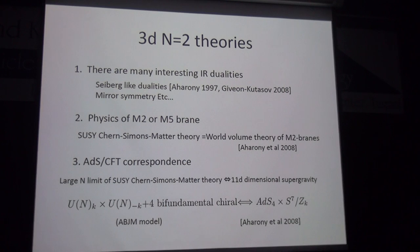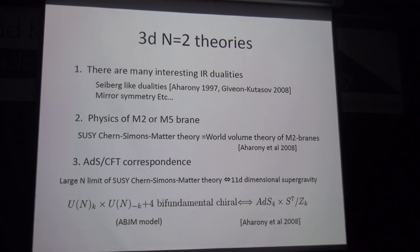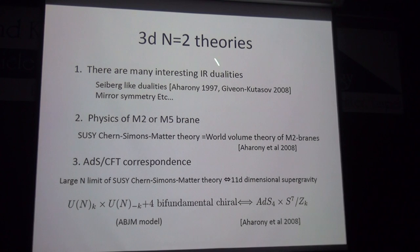Probably most of the audience are phenomenologists; I can count maybe three or four string theorists. So I will briefly explain why we consider three-dimensional N=2 theory, where N denotes the type of supersymmetry.